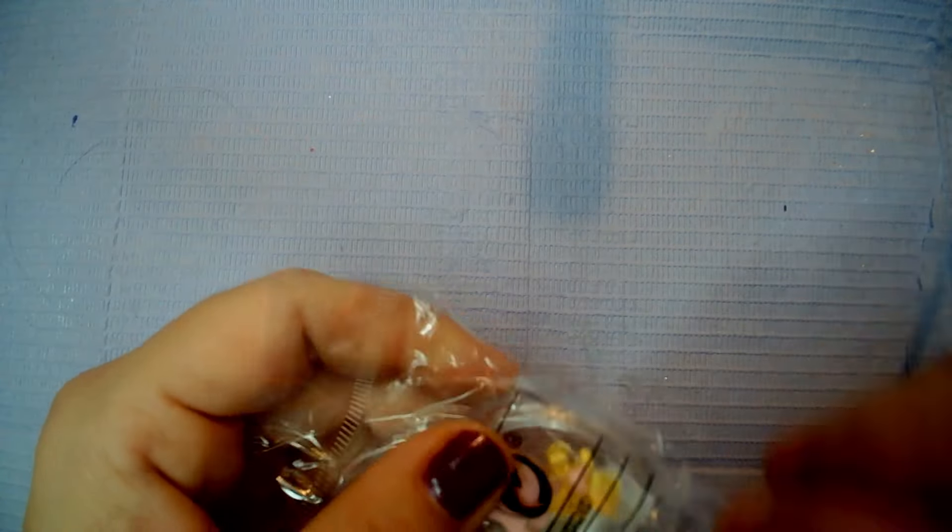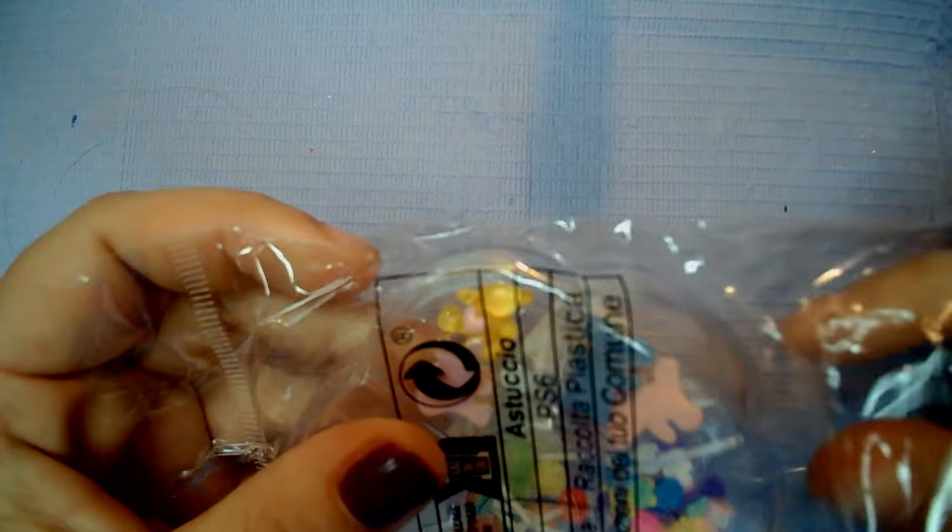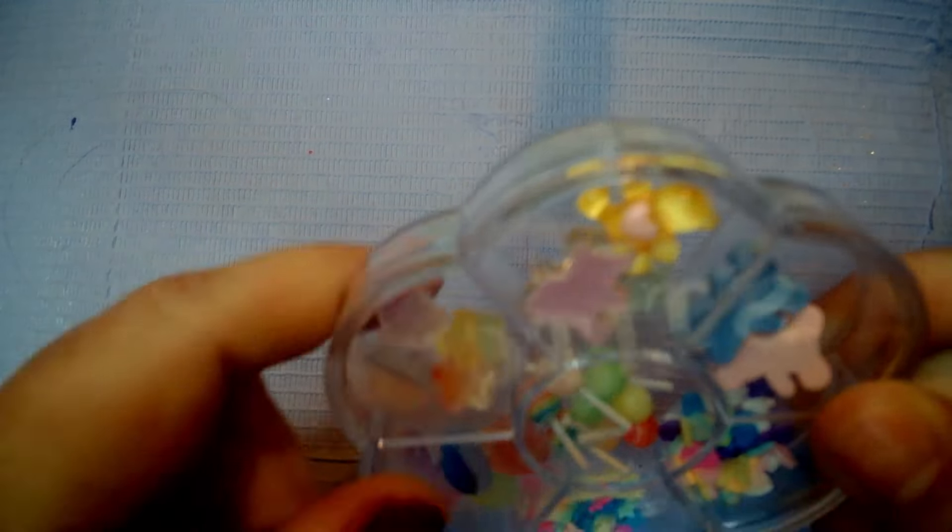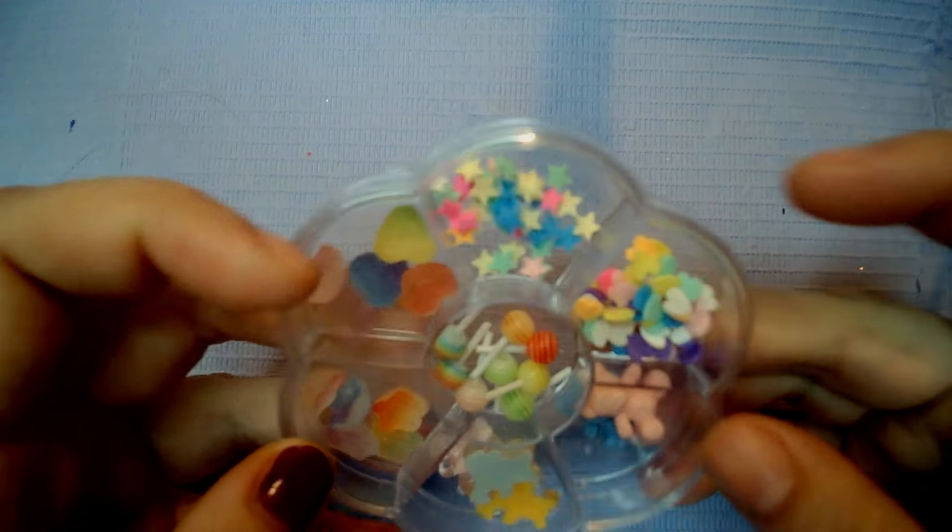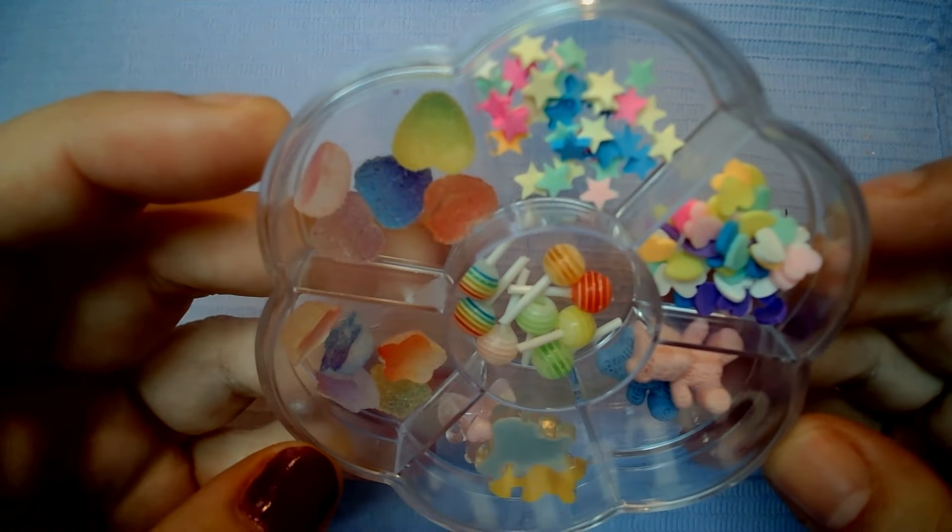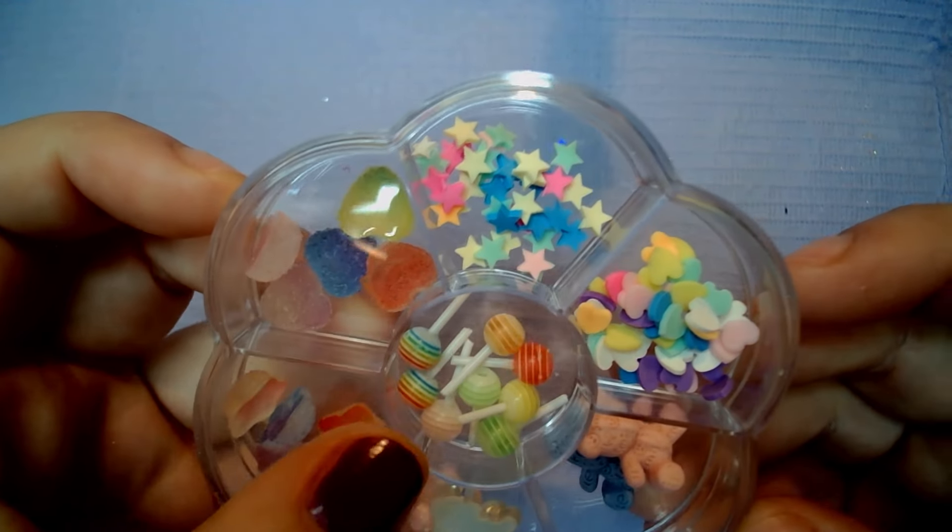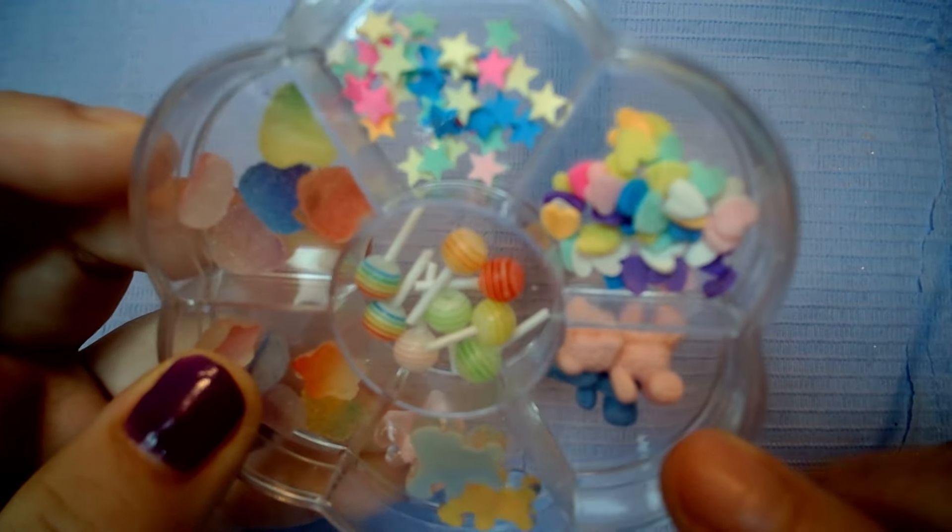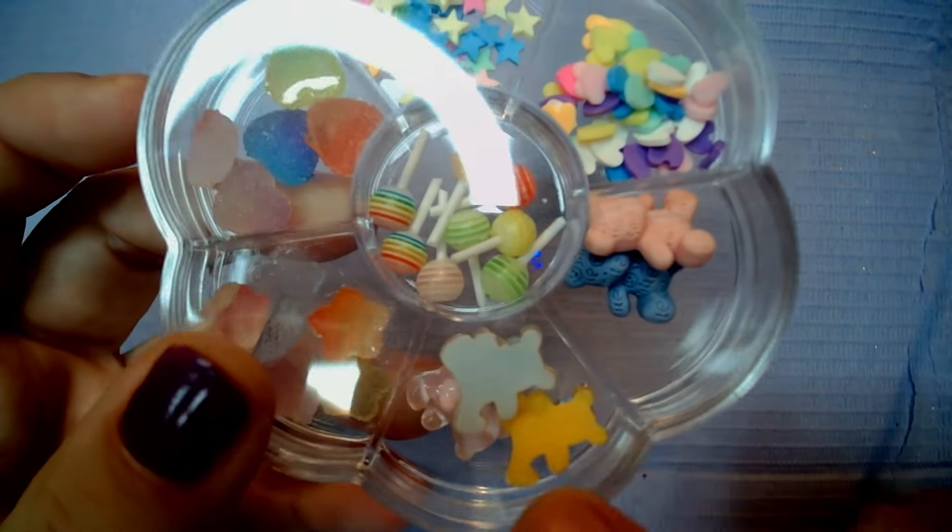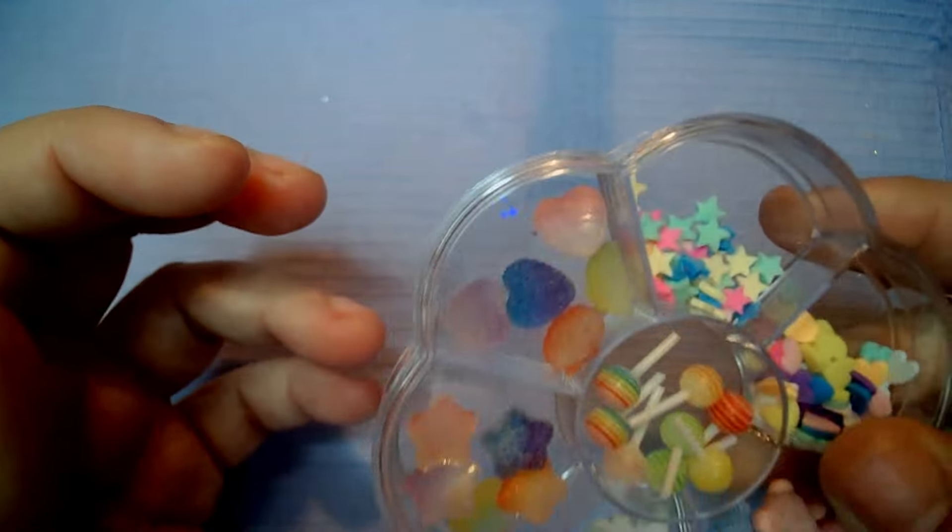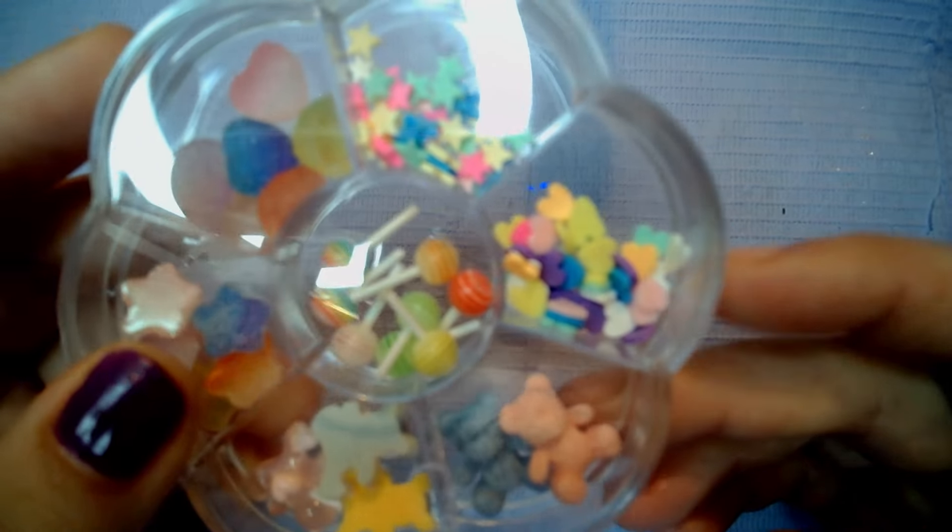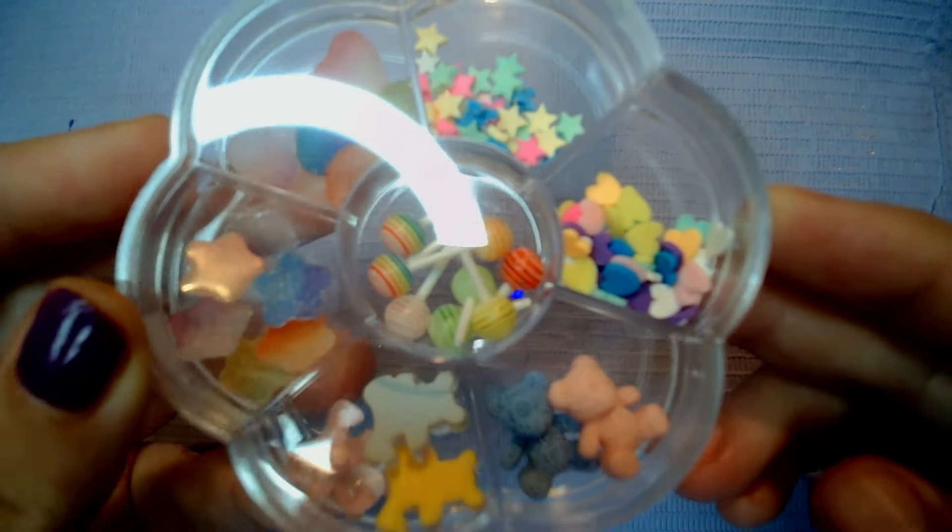Now, this I bought for me. Because I thought I could make some really super cute nails with them. And you got like, the ones that look like sweets. And the lollipops. And these adorable little bears. I just thought I could make a really cute set out of that. So, I bought that for me.